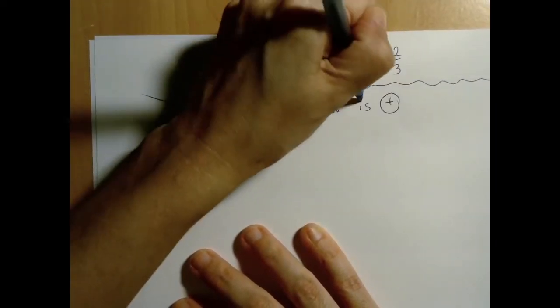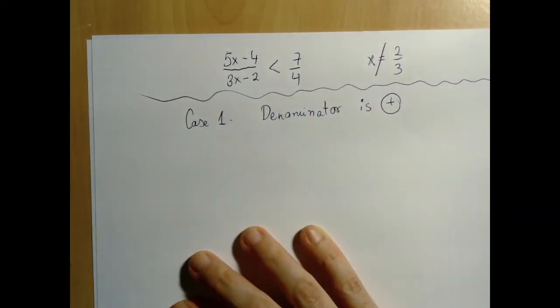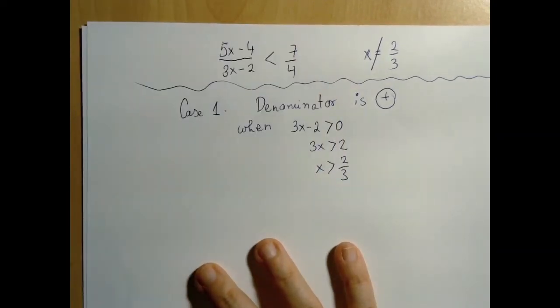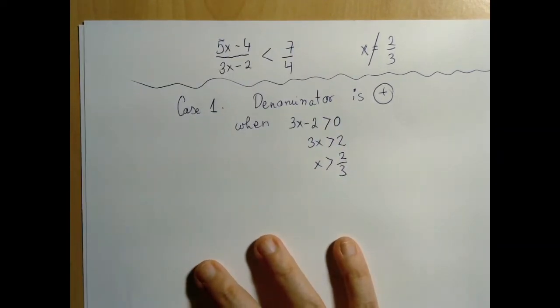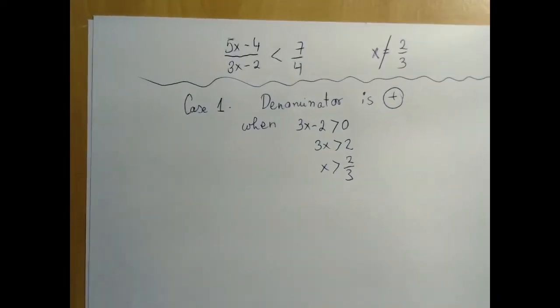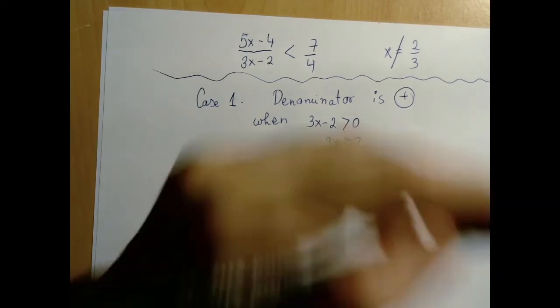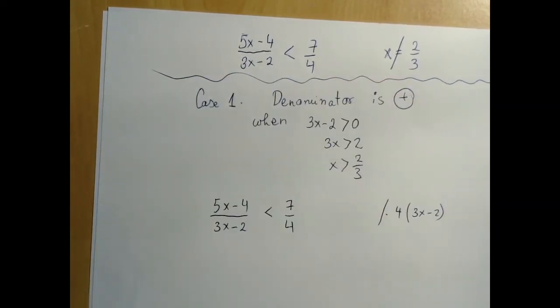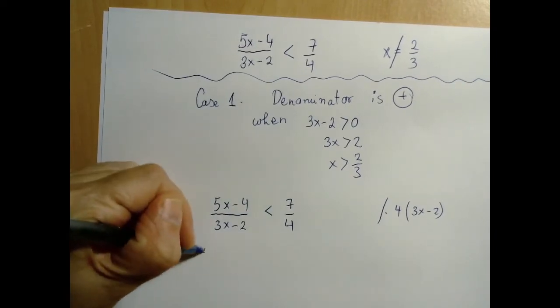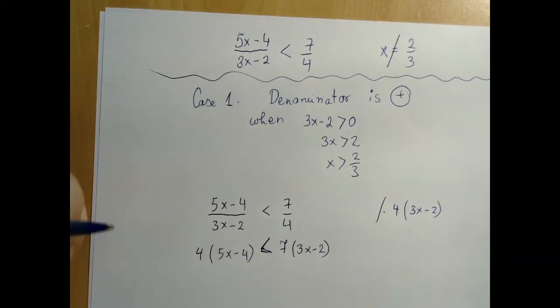So the first case, when the denominator is positive. Now the denominator is positive when 3x minus 2 is greater than 0, and that is when x is greater than 2 over 3. So if x happens to be greater than 2 over 3, then the denominator is positive, which means we can multiply by 3x minus 2 and keep the same inequality sign. So we are going to cross-multiply, which is the same as multiplying by 4 times 3x minus 2.